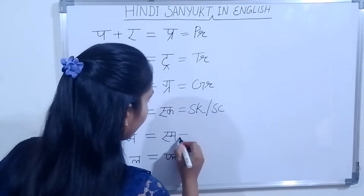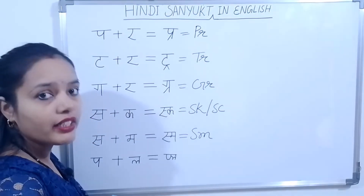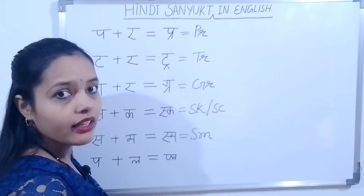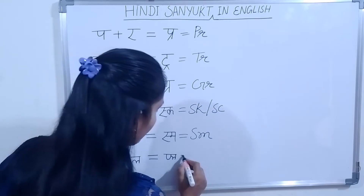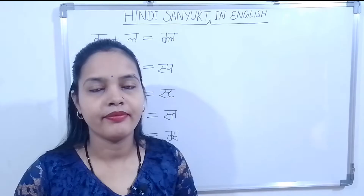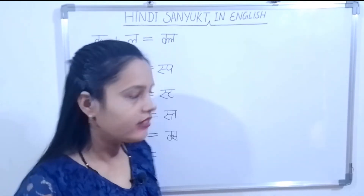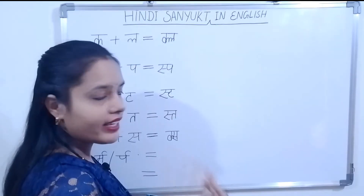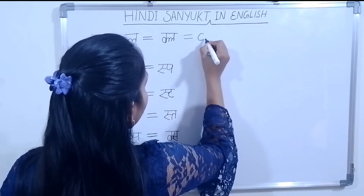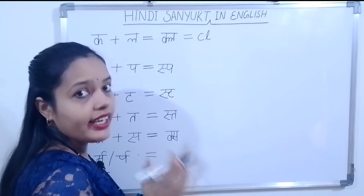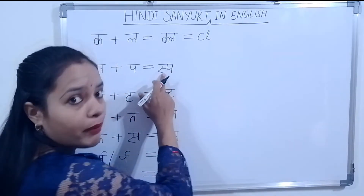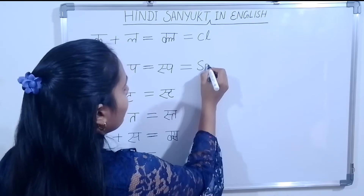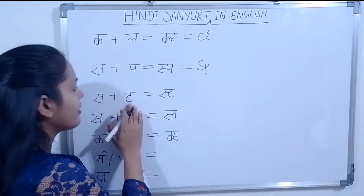Clop ke liye hum likhenge as M, Per and L milke huwa — Pler. Jaise hum play — yeh sab likhte hain. To plug ke liye hum use karenge P, L — Pler. Bez sahih Per and L milke ke huwa raha hai Clop. Jaise hum class, clip — yeh sab likhte hain. Club ke liye hum use karenge she, L, C. Spark — we use S, P — Spark.